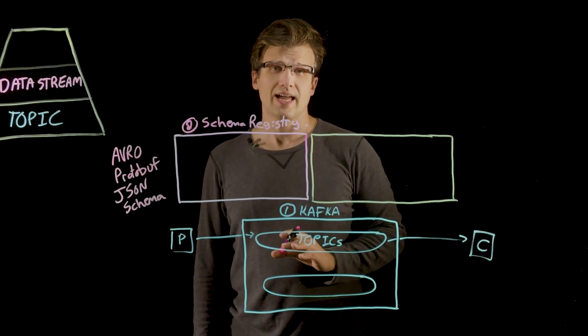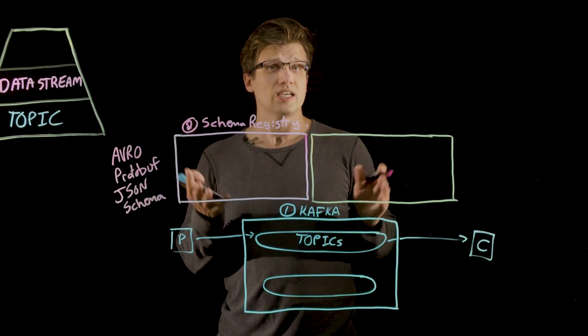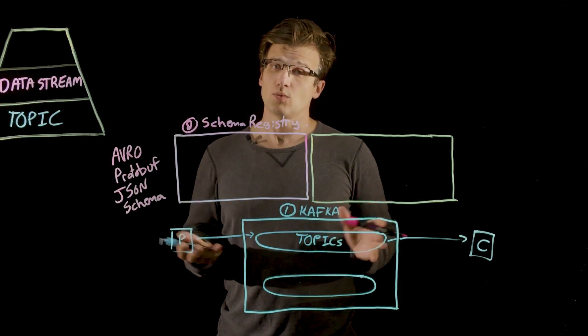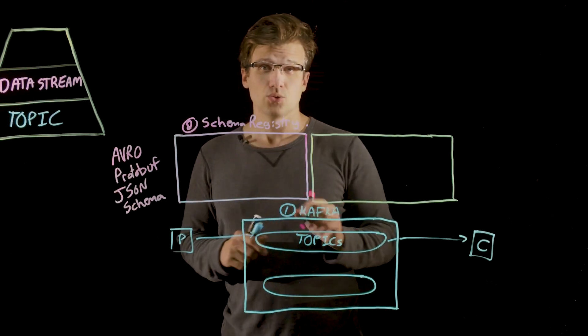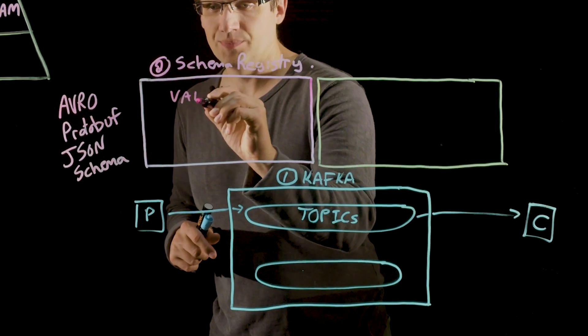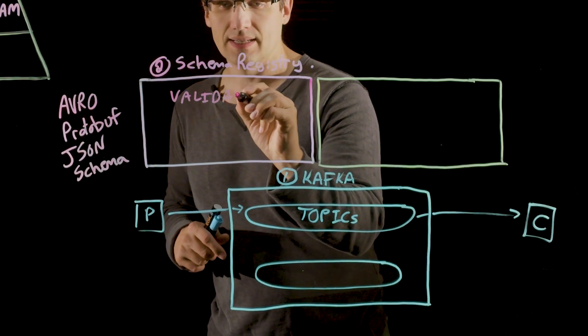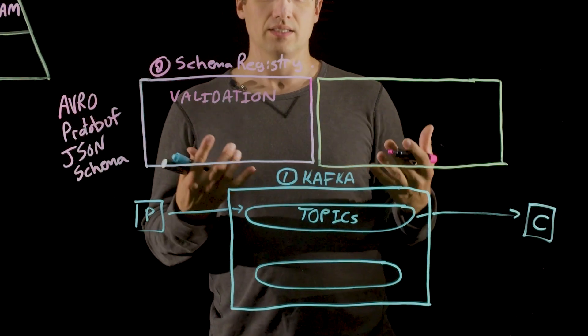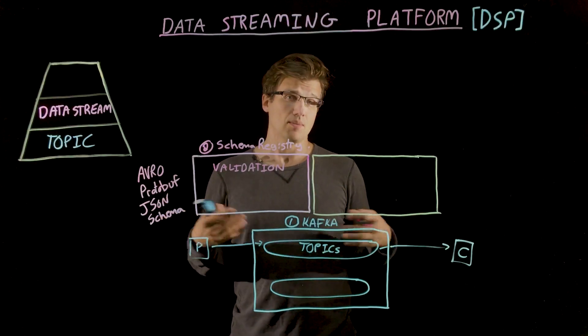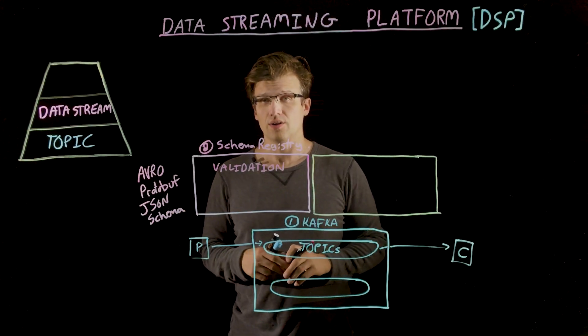The schema registry allows you to manage your schema evolution, such as setting requirements for forwards and backwards compatibility. And it also includes validation. So you can't write data that doesn't conform to the expected structure, say due to a bug or an error on a developer's part.